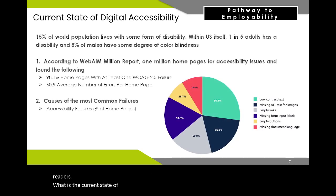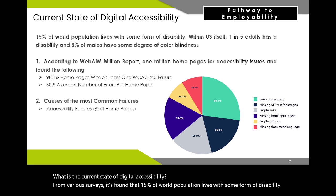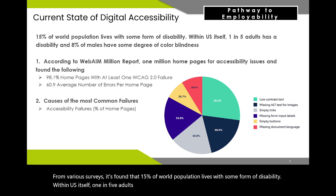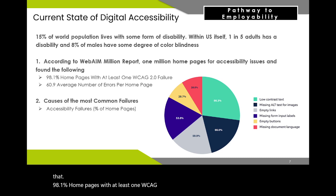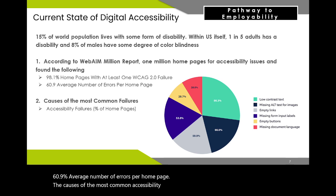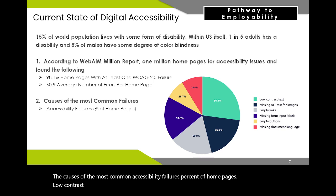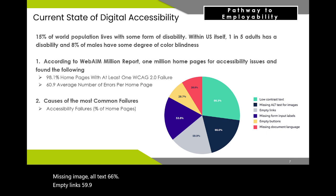What is the current state of digital accessibility? From various surveys, 15% of the world population lives with some form of disability. Within the U.S. itself, 1 in 5 adults has a disability and 8% of males have some degree of color blindness. According to the WebAIM million report analyzing 1 million home pages for accessibility issues, 98.1% of home pages had at least one WCAG 2.0 failure, and the average number of errors per home page was 60.9. The most common failures include: low contrast text at 86.3%, missing image alt text at 66%, empty links at 59.9%, missing form input labels at 53.8%, empty buttons at 28.7%, and missing document language at 28%.